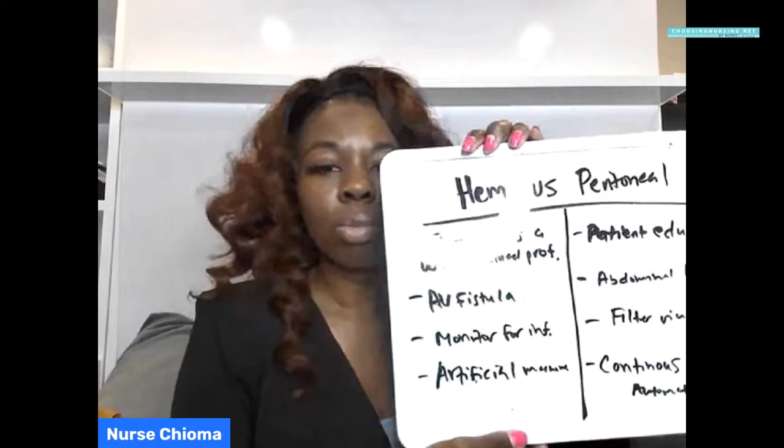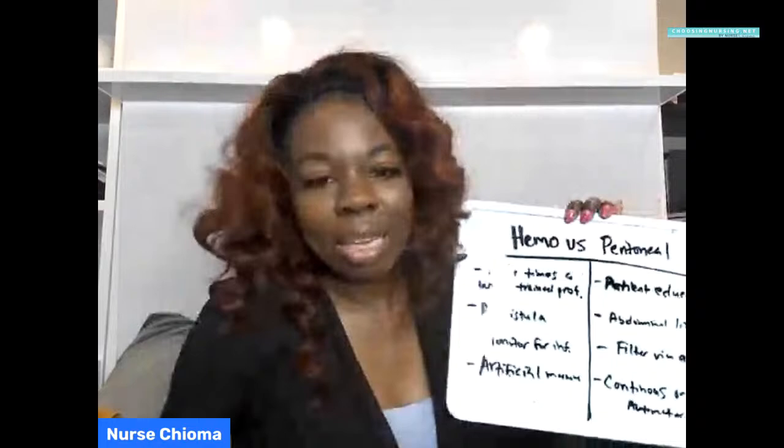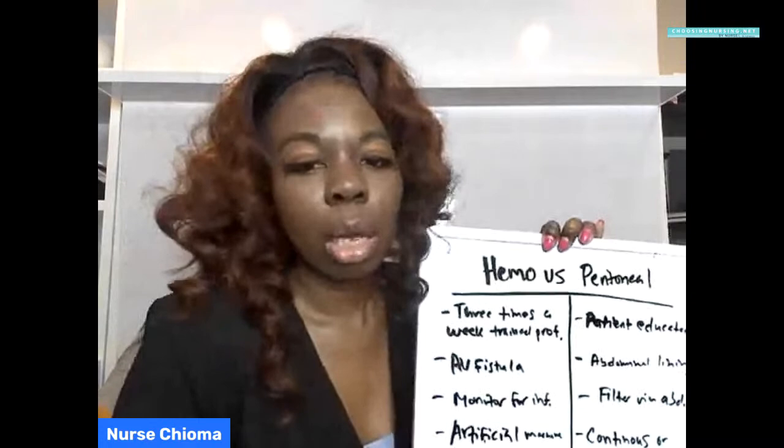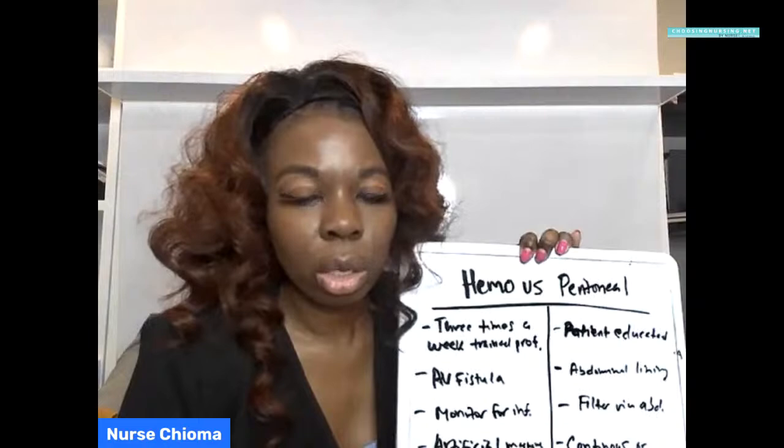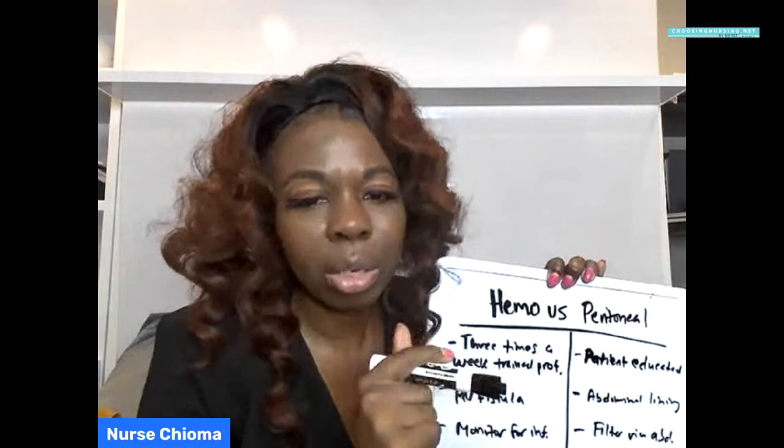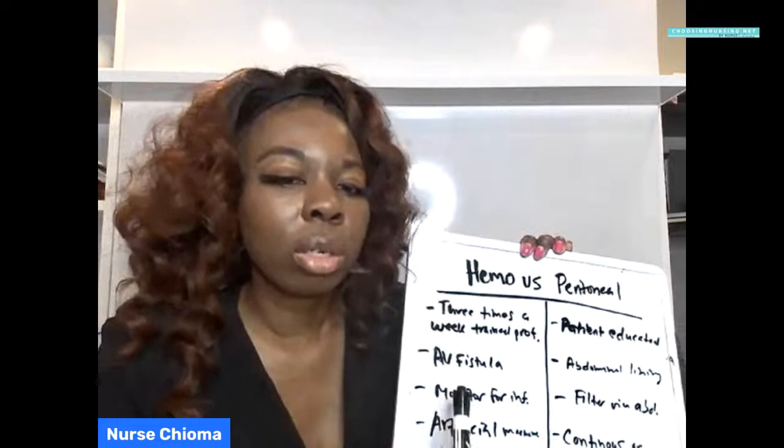When I say most commonly, I mean in the clinical setting hemodialysis is usually most often done. It is up to the patient as far as why they would choose one over the other, which I'll talk about in a minute. With hemodialysis, the patient will typically have what's called a fistula — an AV fistula — which can be located in the upper chest area on either the right or left side, or on their arm.